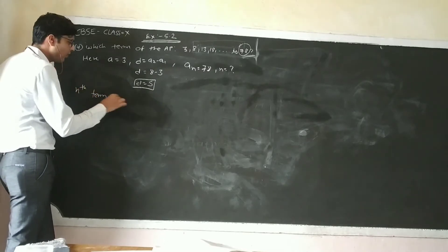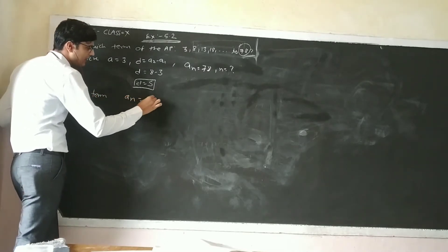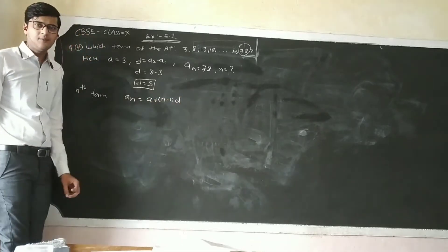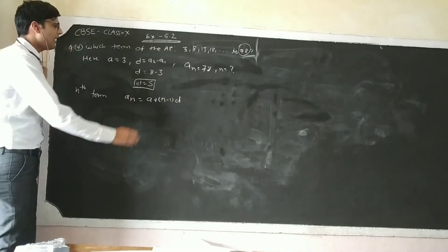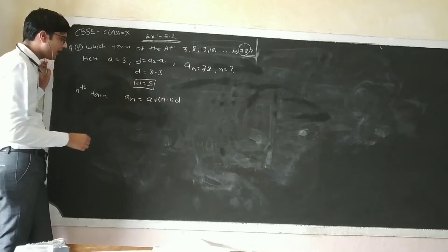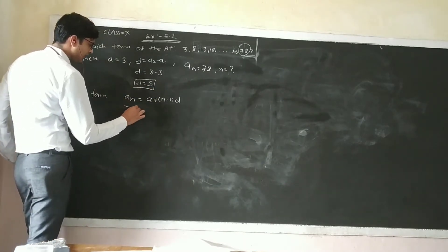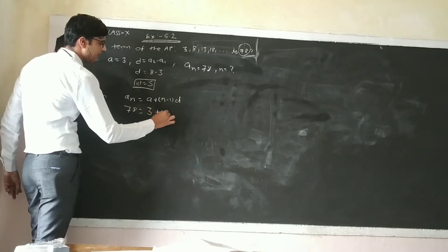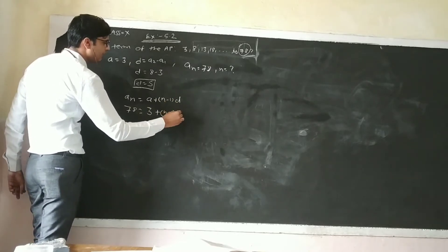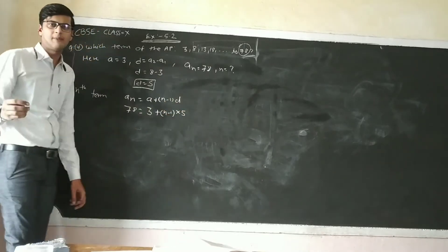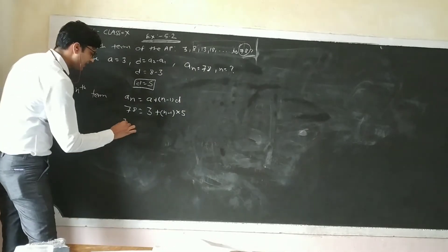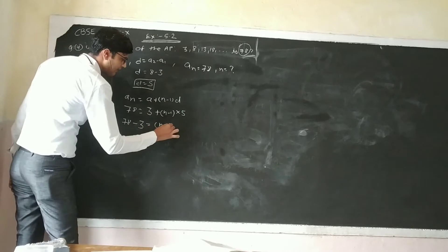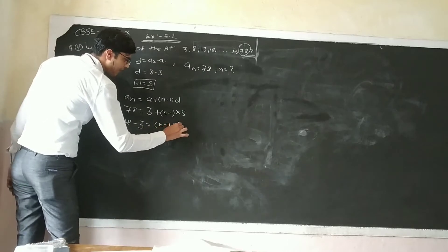The formula is: AN equals A plus (N minus 1) times D. So we put in the values. AN is 78, A is 3, and D is 5. So: 78 equals 3 plus (N minus 1) times 5.